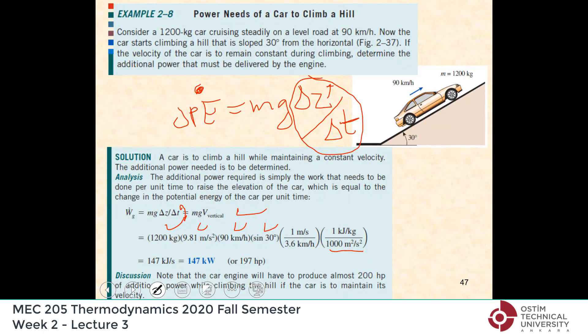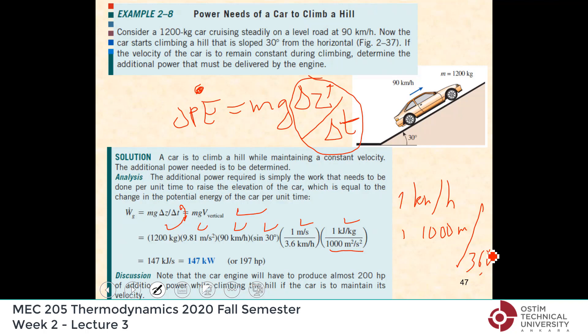The conversion factor is: 1000 meters squared per second squared equals one kilojoule per kilogram, and one meter per second equals 3.6 kilometers per hour — because one kilometer per hour is 1000 meters per 3600 seconds. And if you do the calculation, you will get 147 kilowatts, or 197 horsepower — almost 200 horsepower.